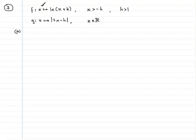Now in the first graph we've got f is such that x maps onto the natural log of x plus k. k by the way is a constant, it's a positive constant, k is greater than 1 and we've got to plot it for x greater than negative k.